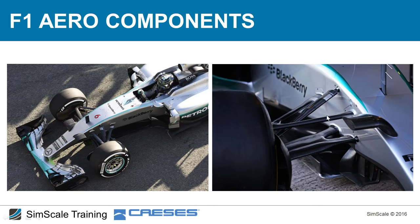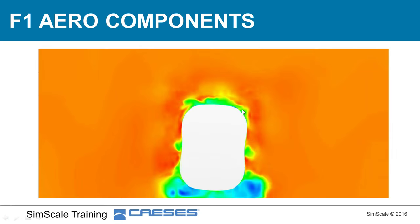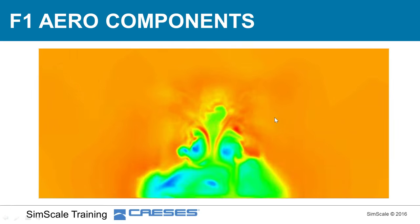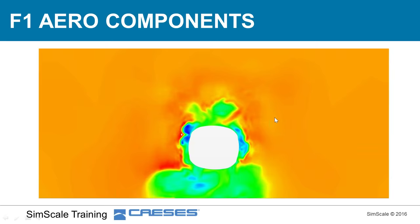The suspension elements are: the lower wishbone, the upper wishbone, the pushrod, and the steering system. We've discussed a great deal about the front tire wake — it's clearly a major focus of front-end aerodynamic development.